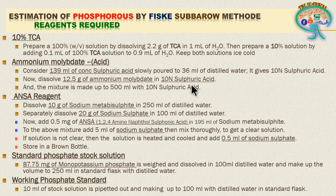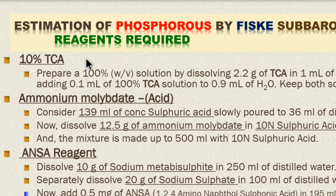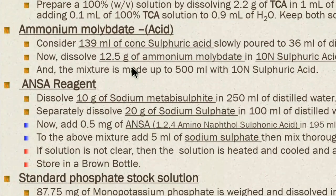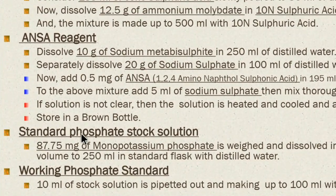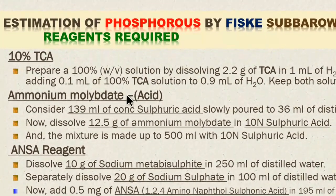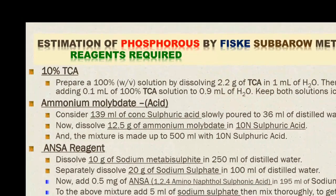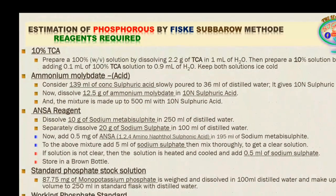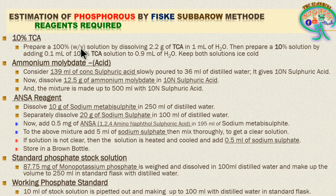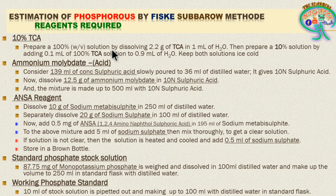The reagents required are 10% TCA, ammonium molybdate in acidic form, ANSA reagent, standard phosphate stock solution, and working phosphate standard. To prepare TCA, dissolve 2.2 grams of TCA in 1 ml of H₂O to make a 100% weight per volume solution. Then prepare a 10% solution by adding 0.1 ml of 100% TCA to 0.9 ml of distilled water. Keep both solutions ice cold.